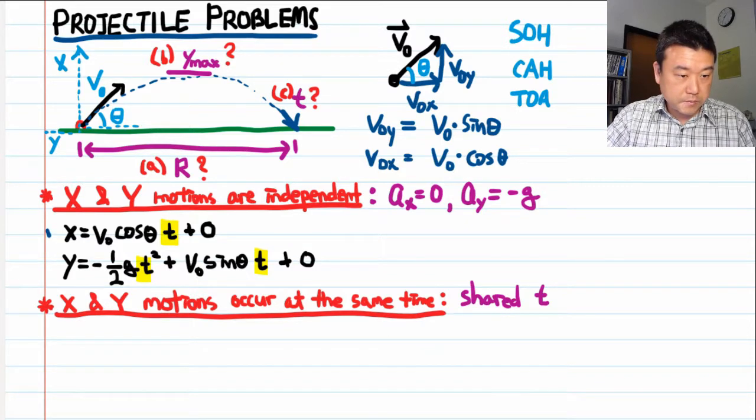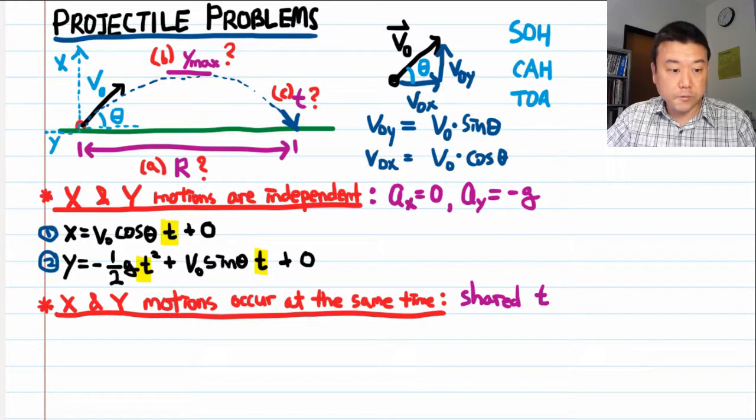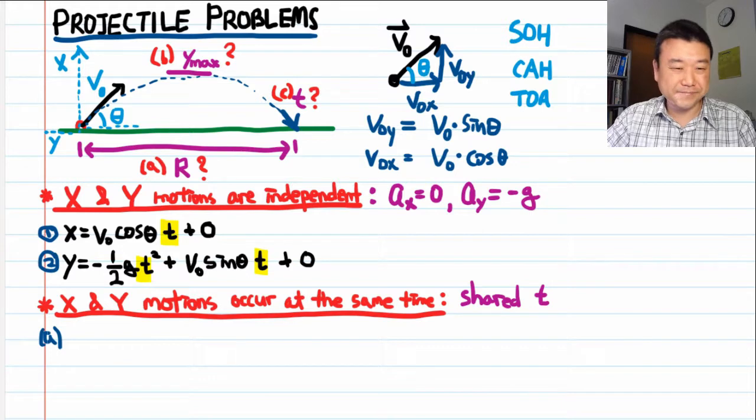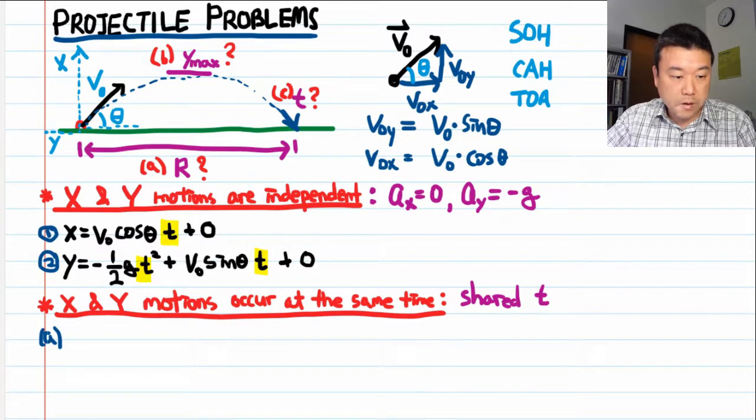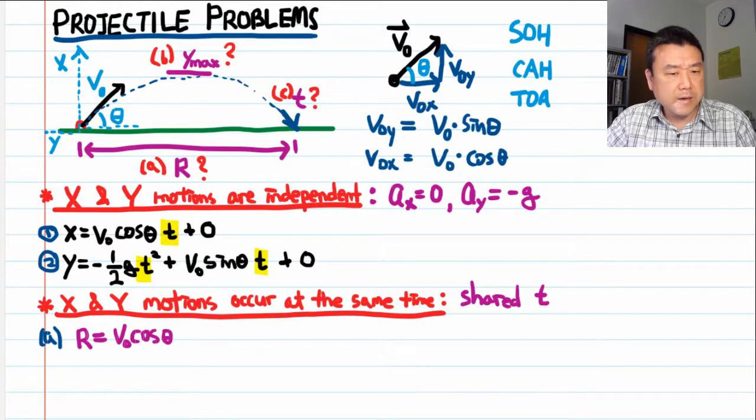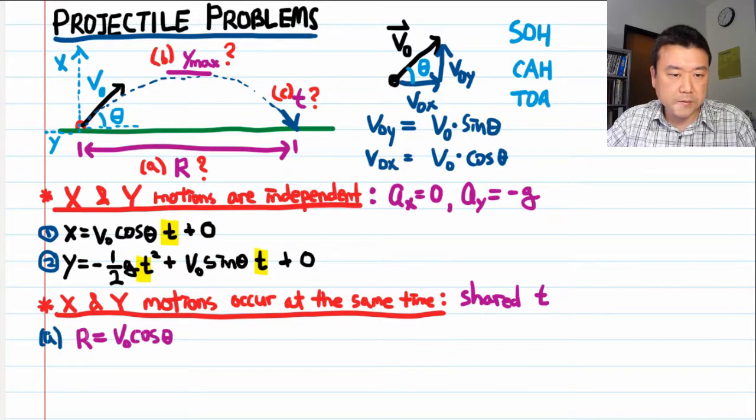Let me number the equations and start out with the first question. What is the range? So range R is the horizontal distance. So I'll use equation one. R is equal to V naught cosine theta. We're given all those times. I need a time.